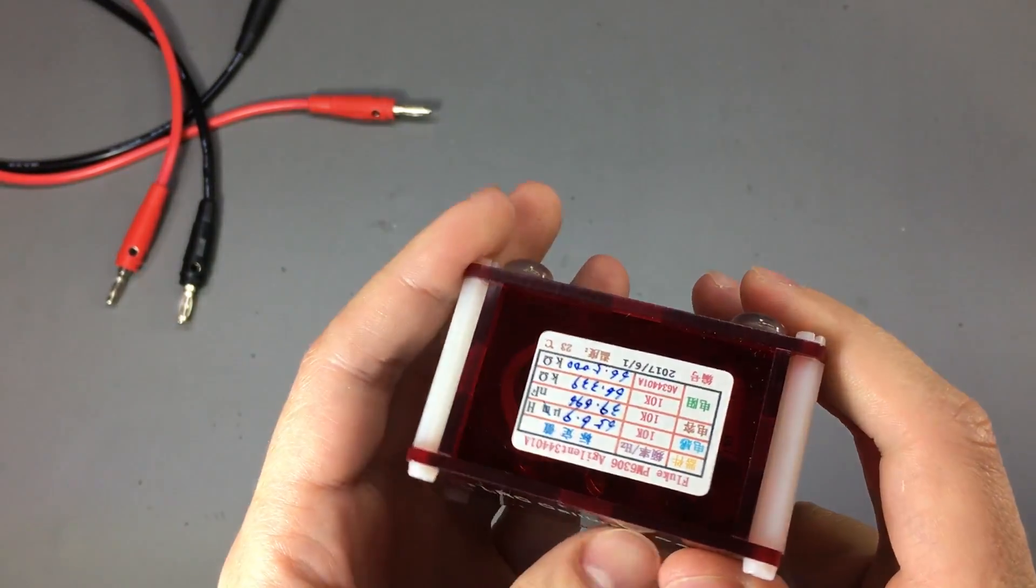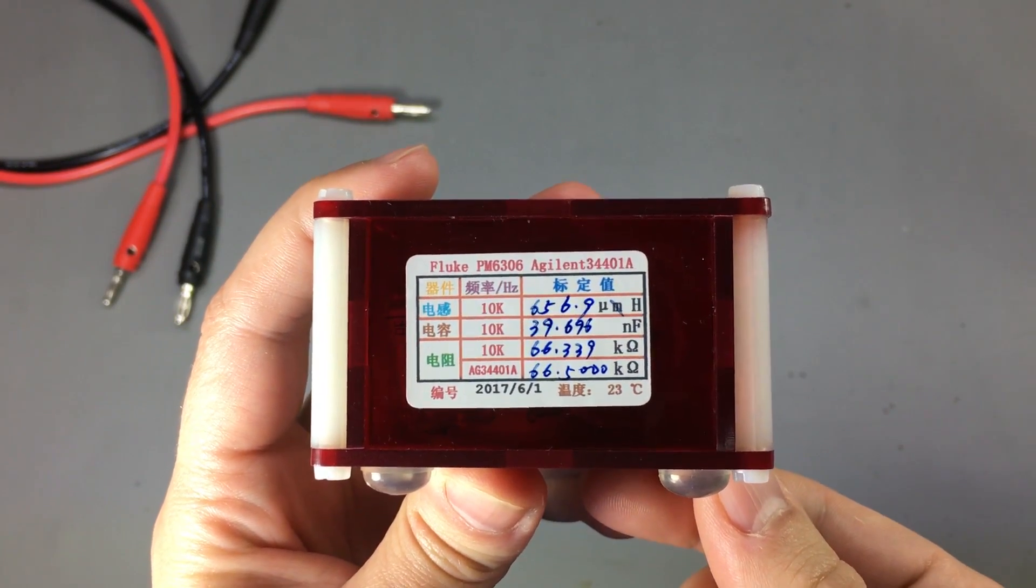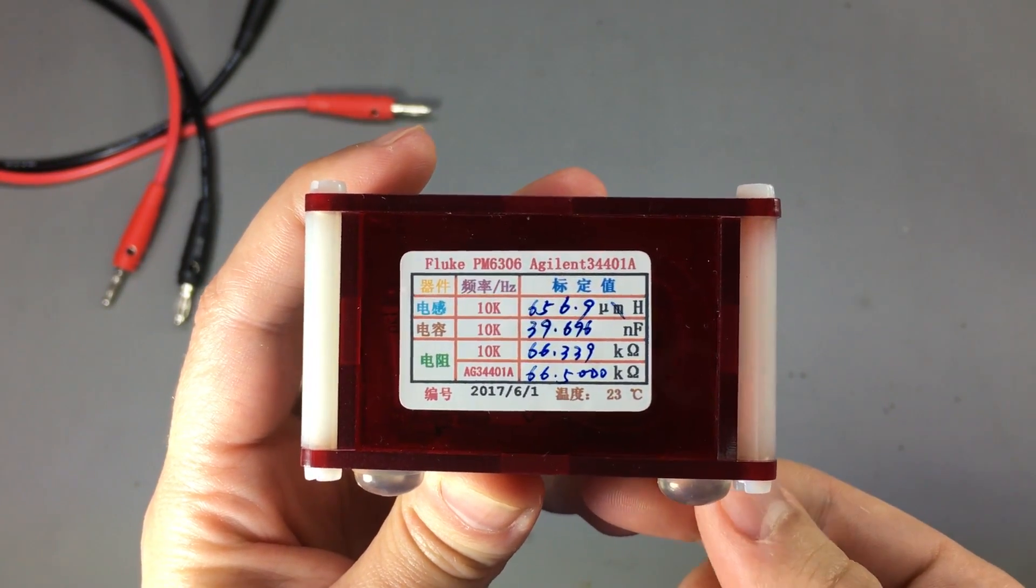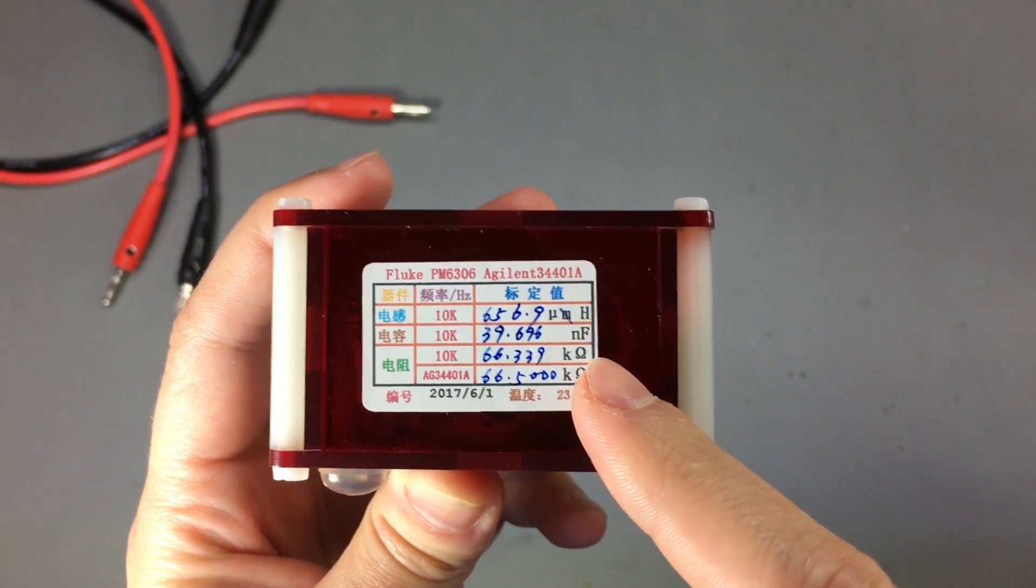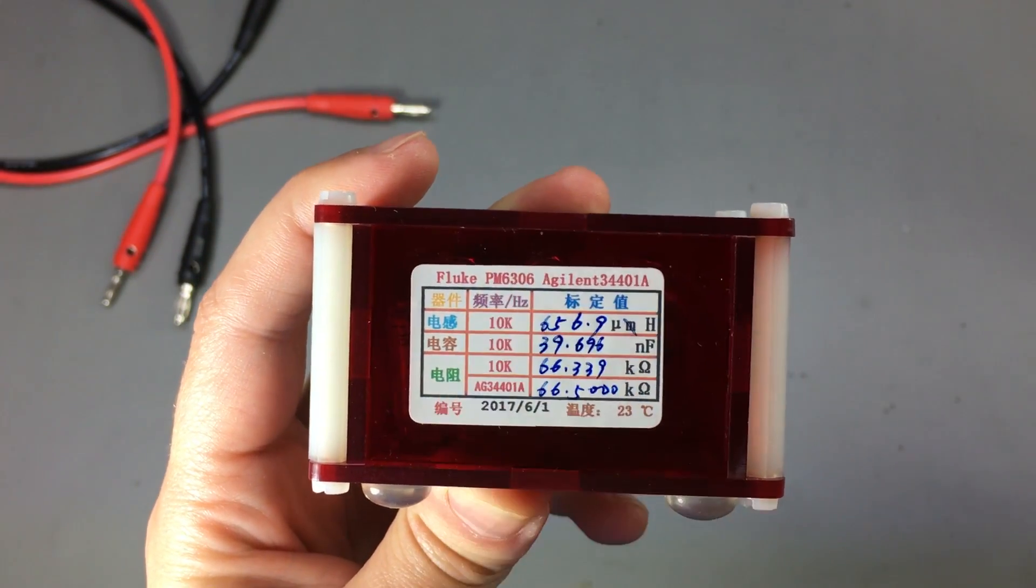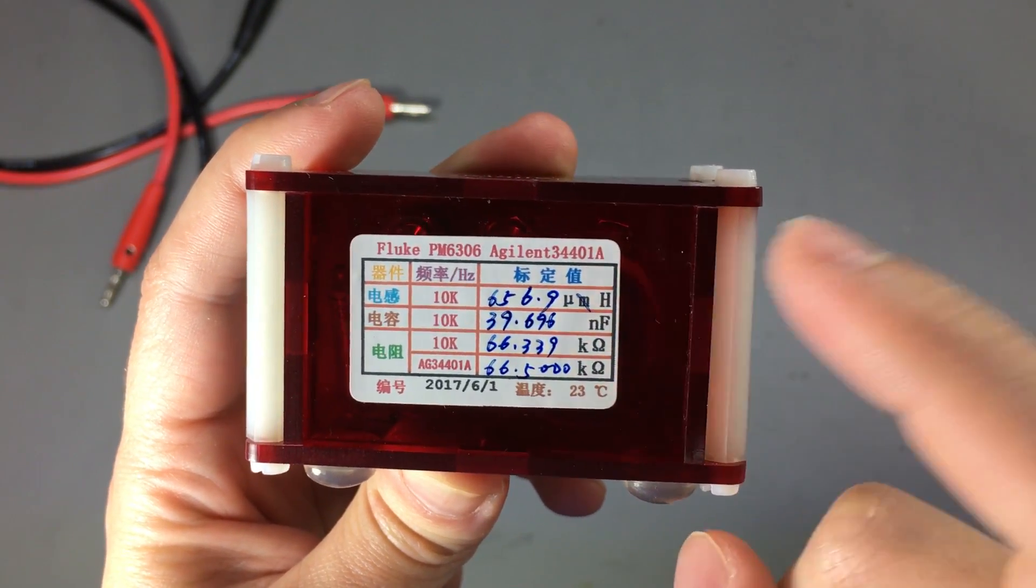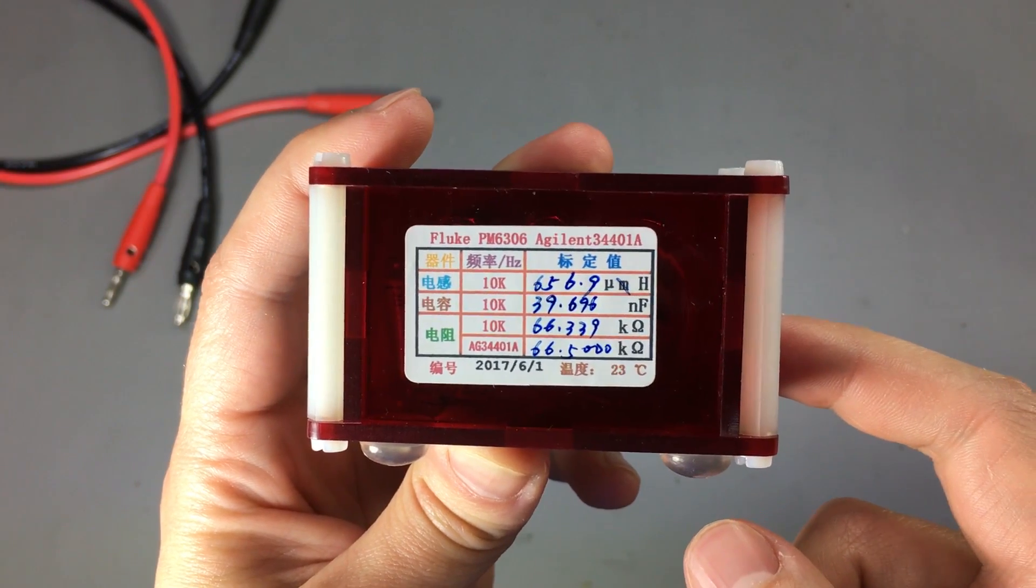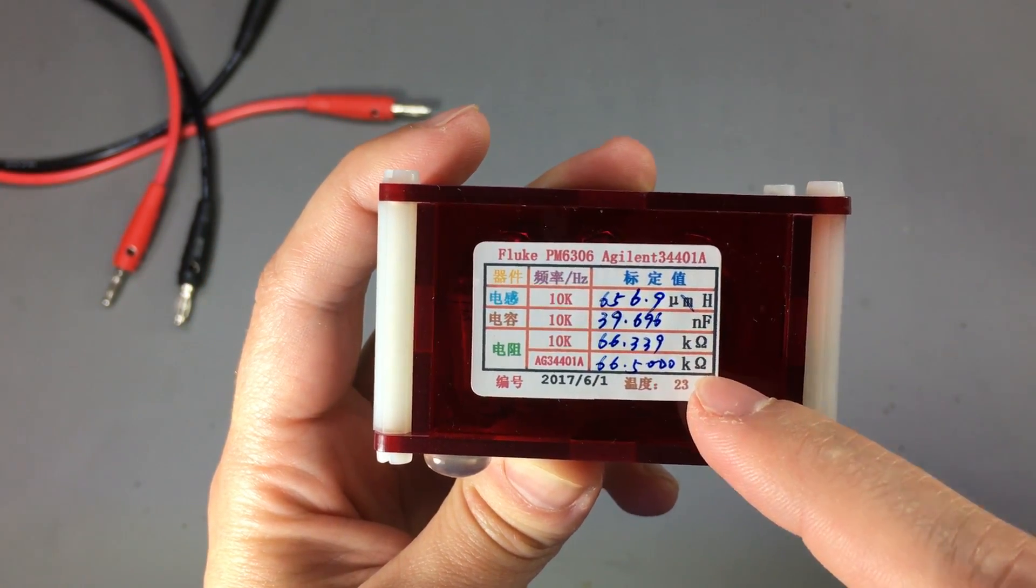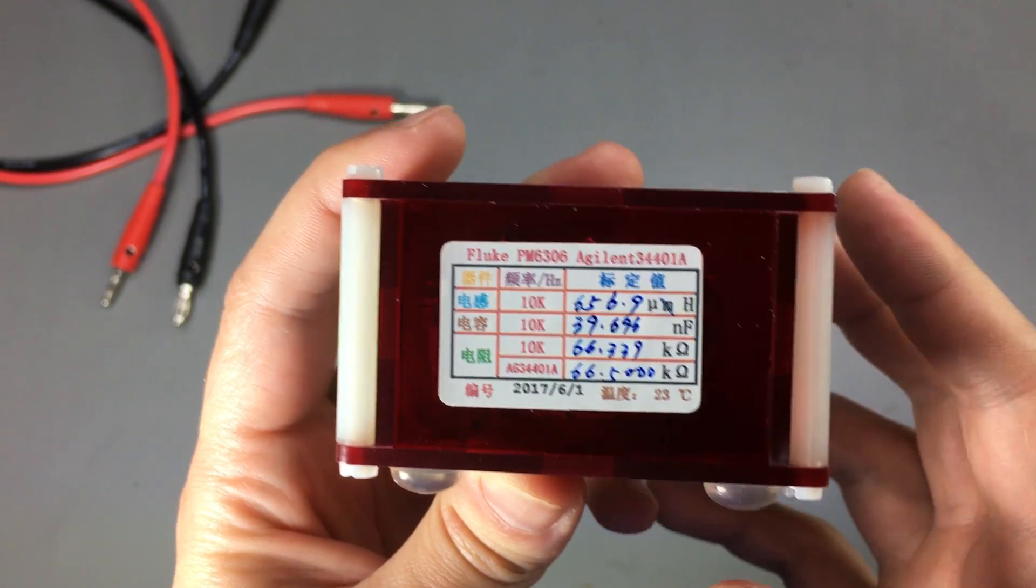On one side it has this label with some handwritten values, so I would imagine this has been measured and the results were written here. I think it's been measured with a Fluke PM6306 and with an Agilent 3441A. This all sounds nice, but can we trust this info? After all, it all comes from some shop on Taobao.